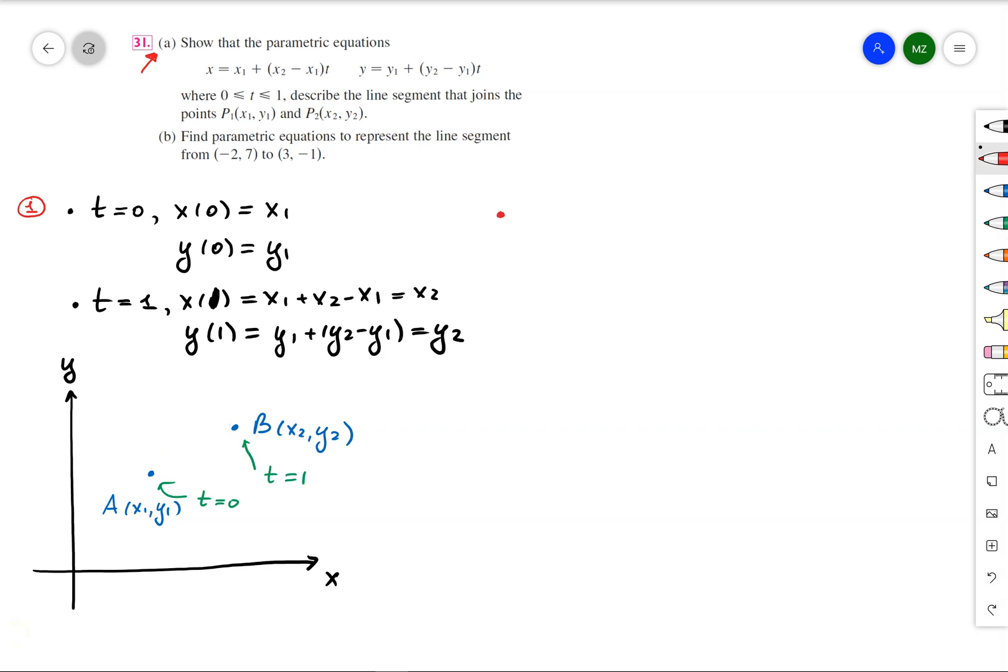For that, what do we need to do? We need to take our parametric equation x equals x of t and y equals y of t and show that that parametric equation describes the line.